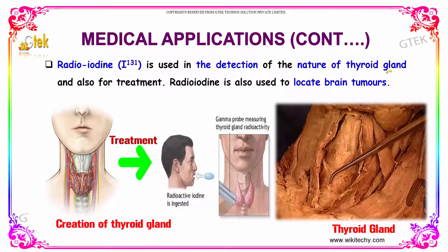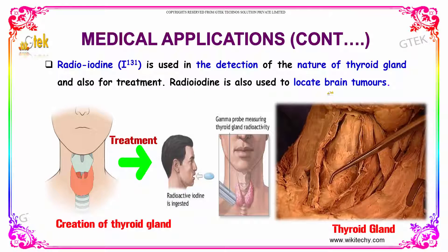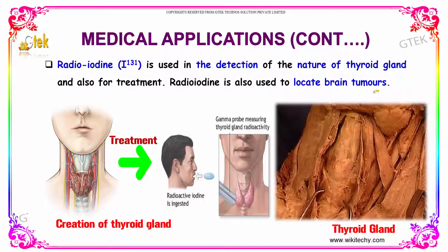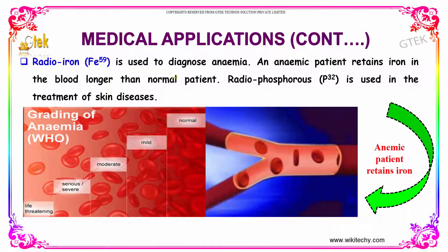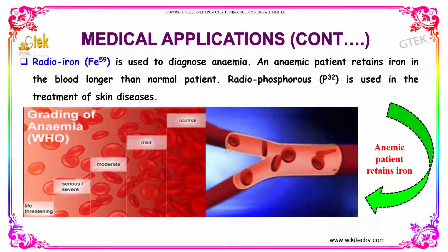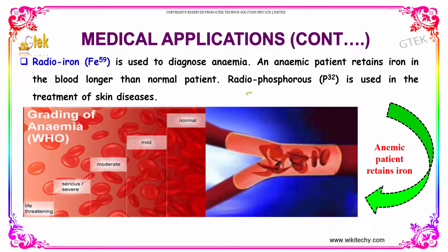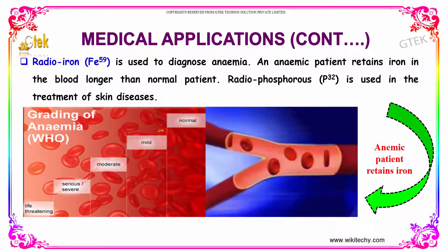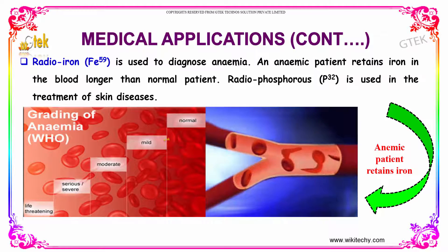Radio iodine is used in the detection of the nature of the thyroid gland and also for its treatment. Radio iodine is also used to locate brain tumors. Radio iron is used to diagnose anemia — an anemic patient retains iron in the blood longer than a normal patient.